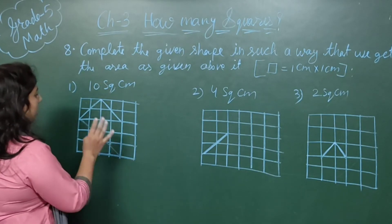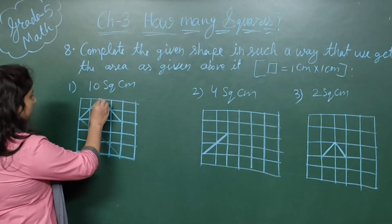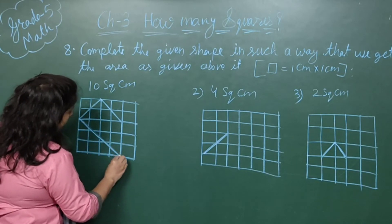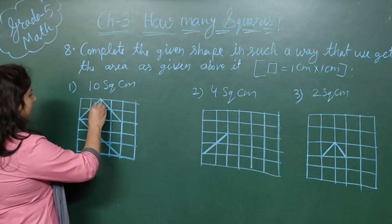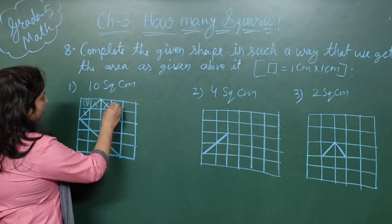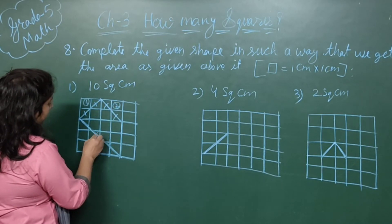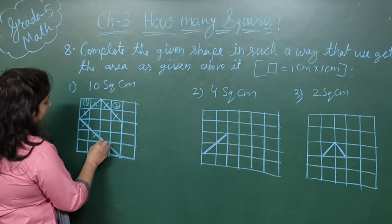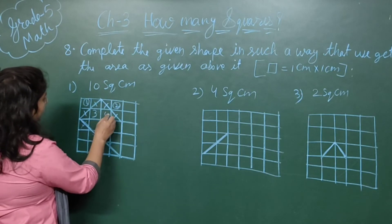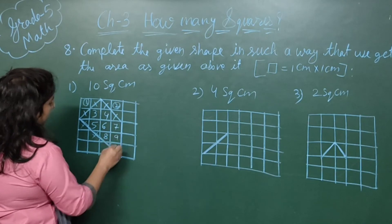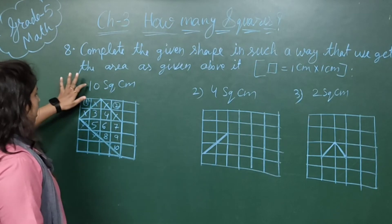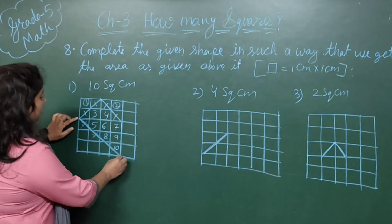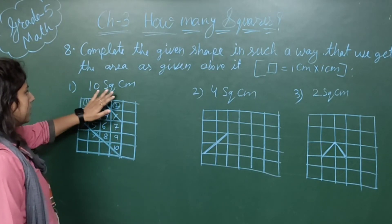When the target area is given, you have to complete the shape by drawing lines. On the square sheet, two lines are given which form one shape. I am drawing an extra straight line from the scale. Half and half make 1, half and half make 2. Less-than-half parts are omitted; more-than-half parts are counted. Counting: 1, 2, 3, 4, 5, 6, 7, 8, 9, and 10. This shape has an area of 10 square centimeters. Students, draw one line from the starting point to complete this shape.